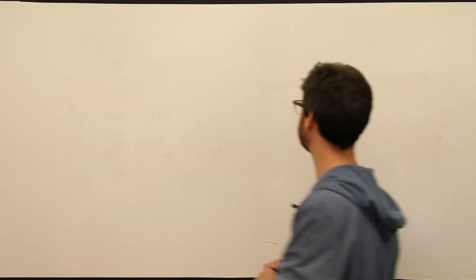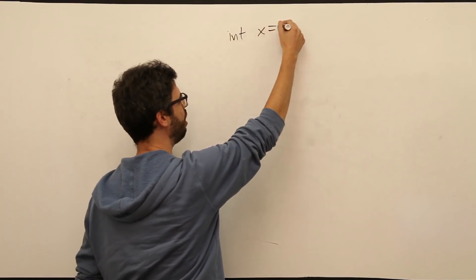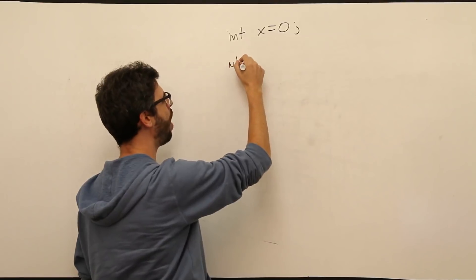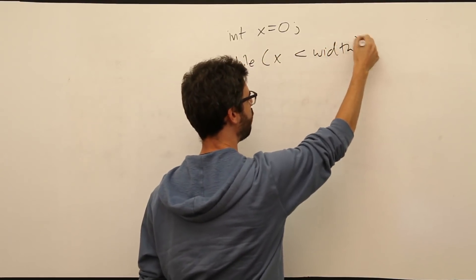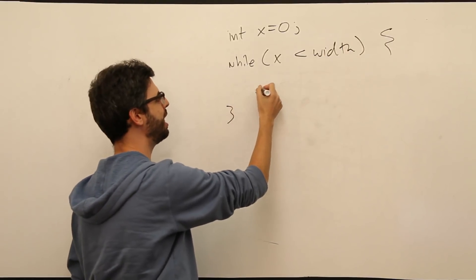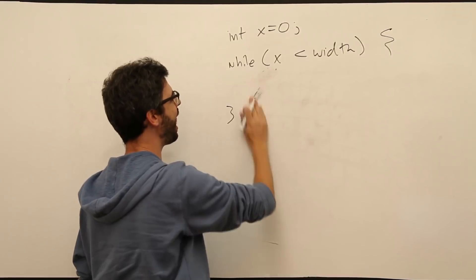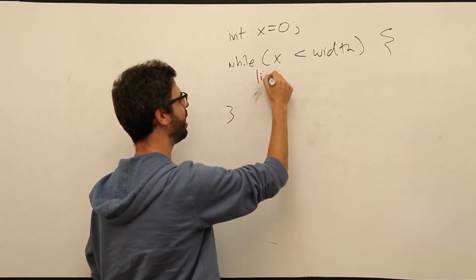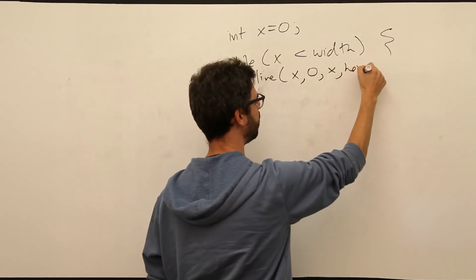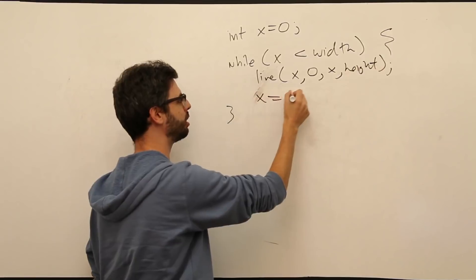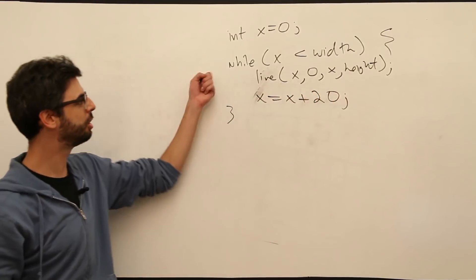To do that, we know we have to say: first we start with x equal to 0. Then we say, while x is less than the width of the window, draw something and increment. So draw something being the line — the line which goes from x comma 0 to x comma height. And then increment x by some amount, I think I said 20 pixels — an arbitrary choice. This is our while loop. It gives us a line, a line, a line, all the way to the edge.